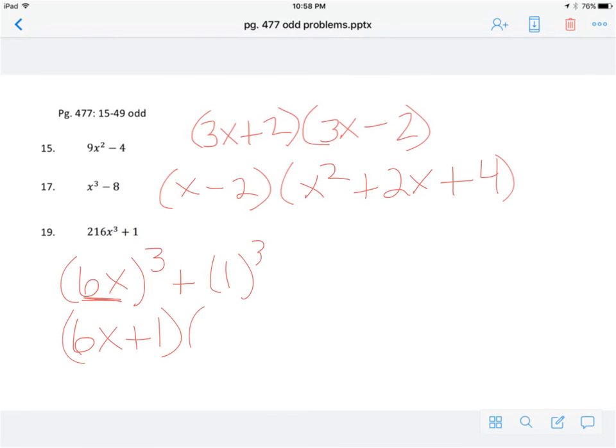So this time it is 6x plus 1, that's u plus v, and then u squared is going to be 6x. So notice the whole term of 6x is u. So you're going to go 36x squared, then minus, because it's minus, this middle term is minus in this pattern, minus u times v. So 6x times 1 would just be minus 6x, and then plus v squared, which would just be 1. And so there you have it.